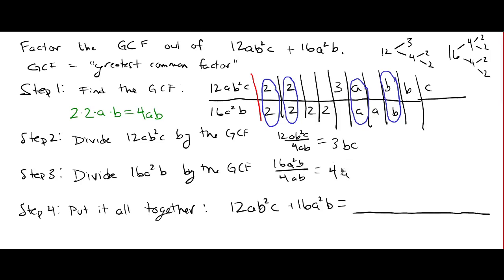Okay, and so what this means is if we put it all together, we can factor out the GCF. So it'll be 4ab, that's what our GCF was, times the first term when we pull out this 4ab, we have 3bc left. And when we pull the 4ab out of 16a squared b, we have 4a left. So this first term, we pull that GCF out, we have 3bc. The second term, we pull it out, we have 4a. We multiply it using the distributive property, we get our original polynomial back.